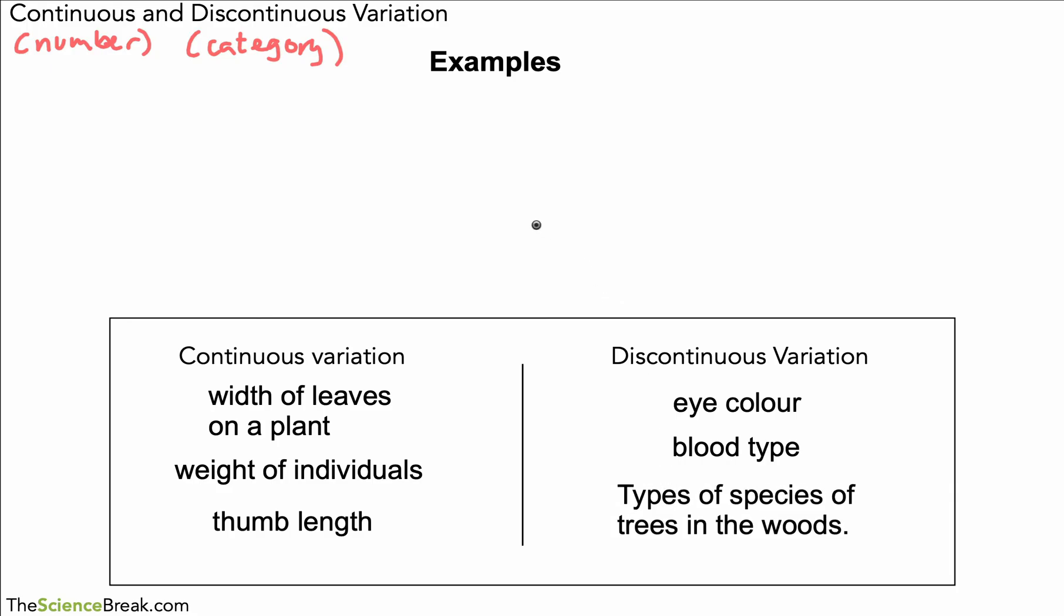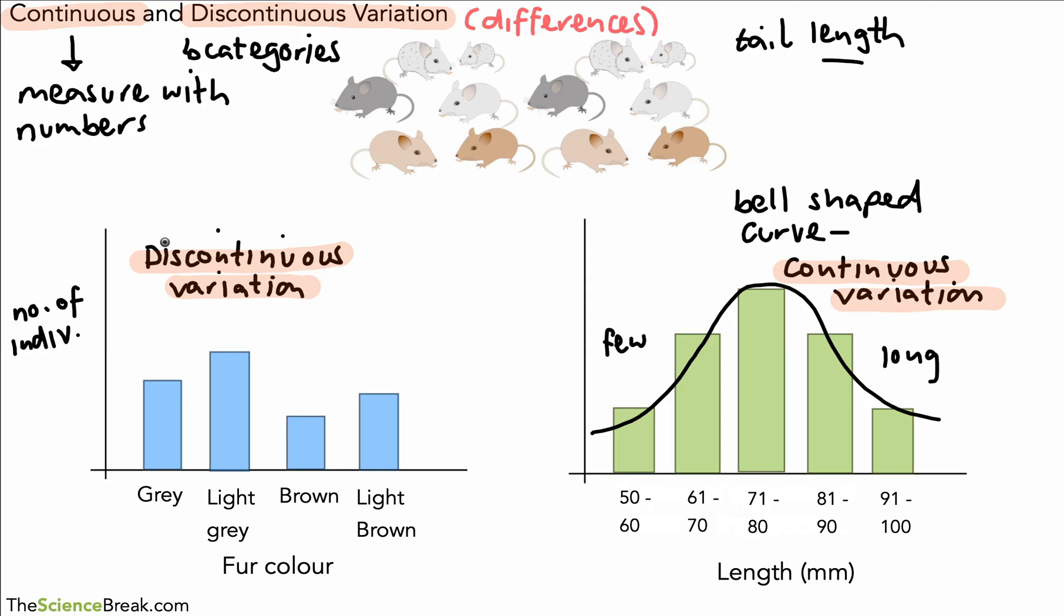So hopefully that made sense. You should be able to describe variation as continuous or discontinuous and just recognize that with a discontinuous variation graph is usually a bar chart, there's no pattern, and with continuous variation if we have large enough number of samples we always get a bell shaped curve or the bars show a bell shaped pattern when you count out the numbers. Okay, so that's it for the video for today. Thank you for watching and I'll see you soon.